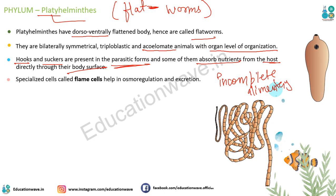Excretion aur osmoregulation ke liye inke paas ek alag cell hoti hai jise hum flame cells kehte hain. Inki body mein flame cells hote hain jiski wajah se woh apna waste material bahar nikal paate hain. Kyunki proper alimentary canal nahi hoti toh flame cells yeh kaam karte hain.